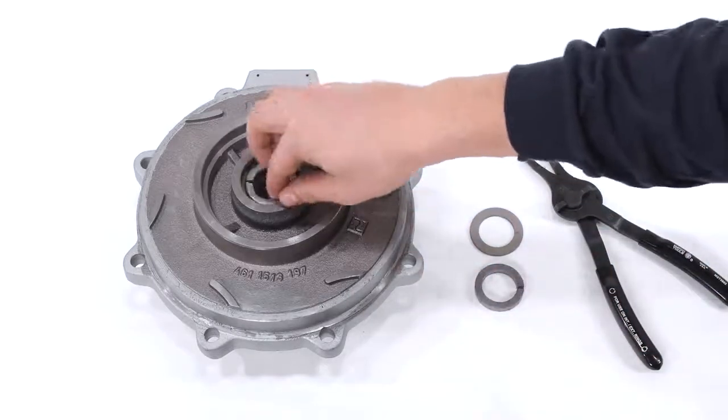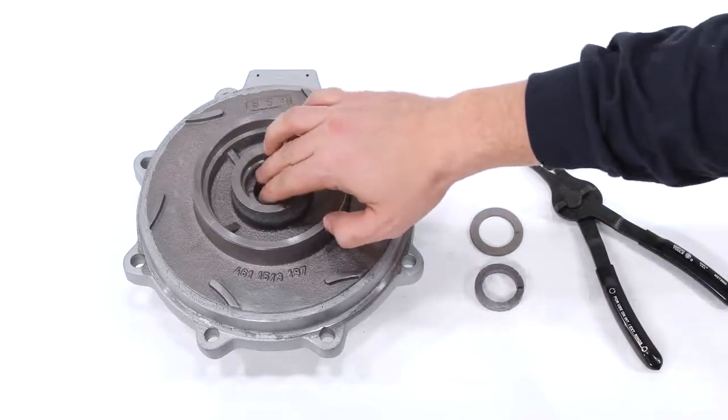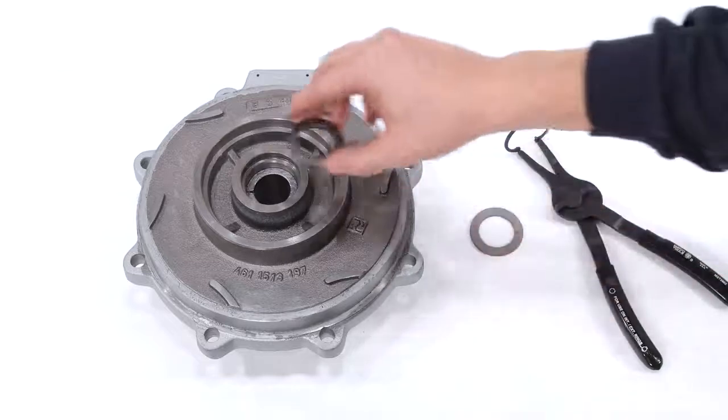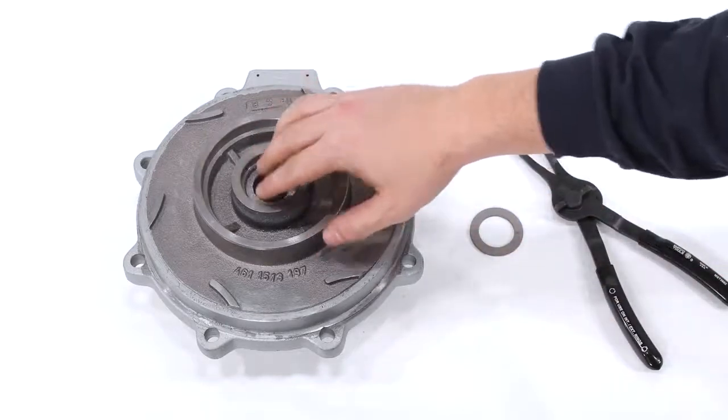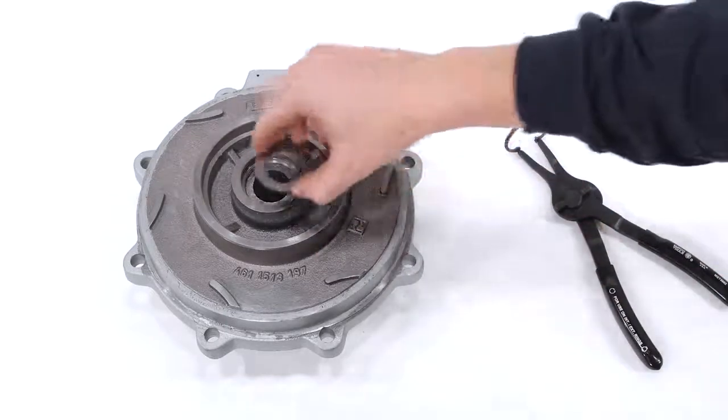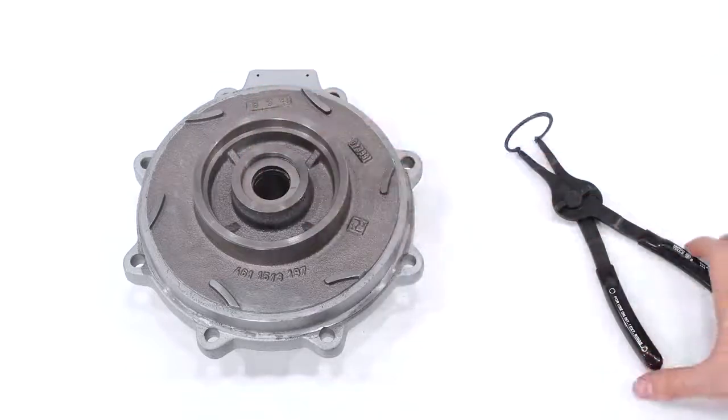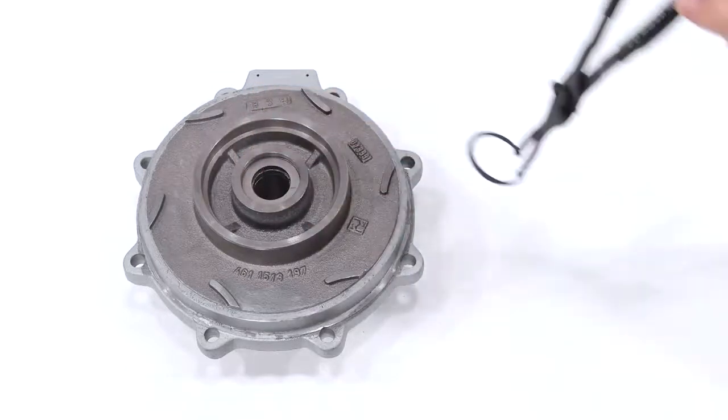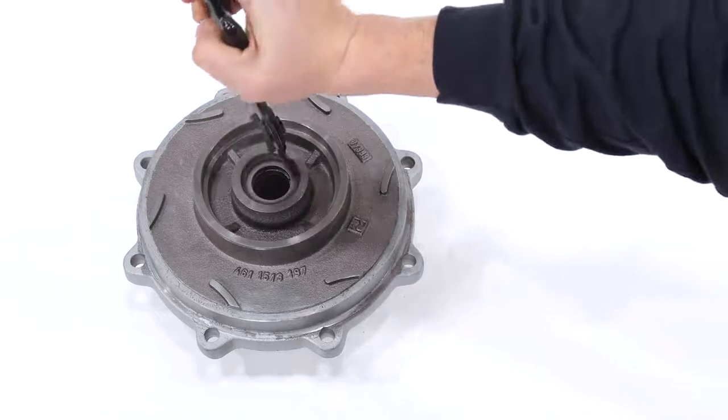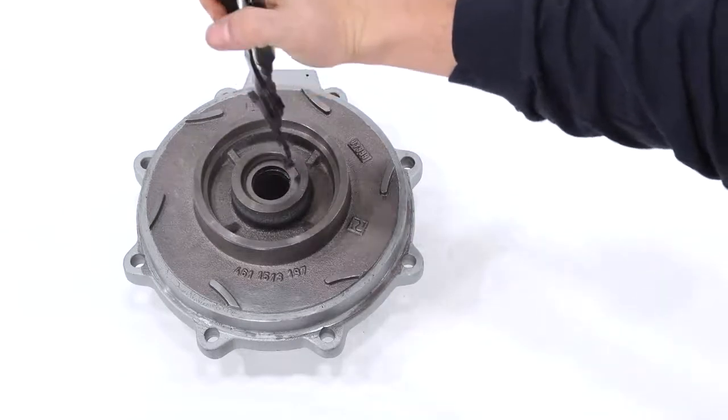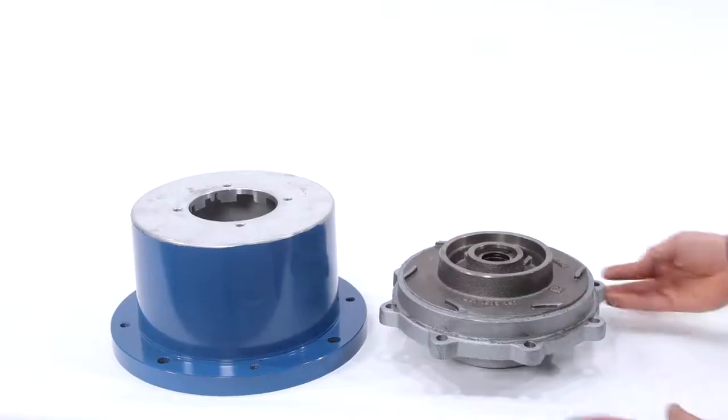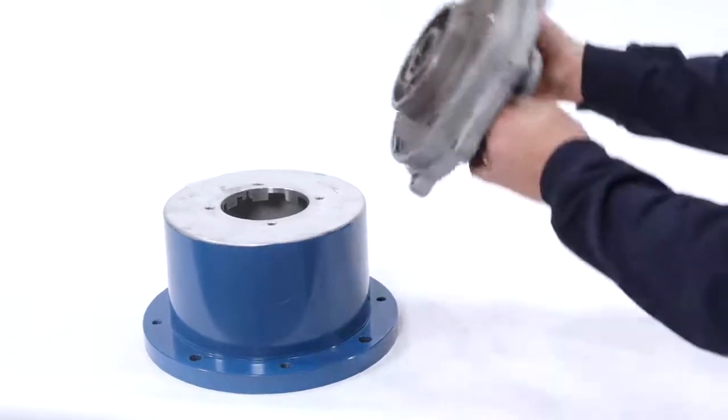Install two packing rings into the stuffing box of the casing cover, making sure the cuts in the packing are opposite each other. Next, install the spacer followed by the snap ring. Place the pump cover on a stand to prepare it for installation.